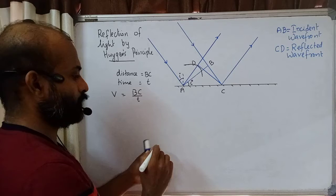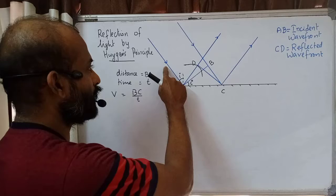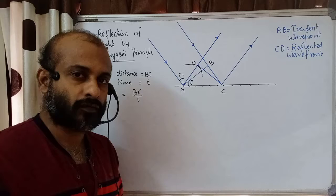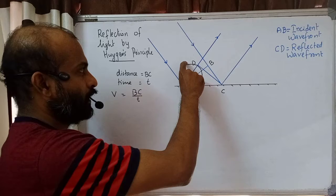These two are the incident light rays and AB is the incident plane wavefront. Now we need to get the position of the reflected wavefront. These light rays are undergoing reflection at points C and A. To get the reflected wavefront, we take the length BC and, from point A, draw a sphere of radius BC.